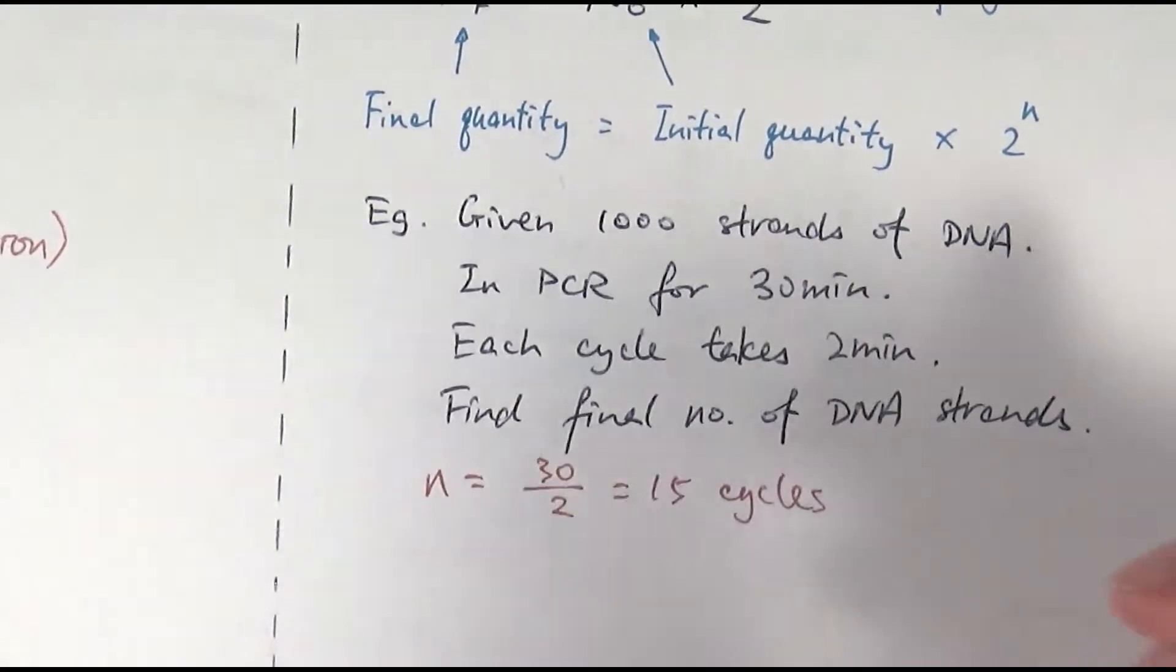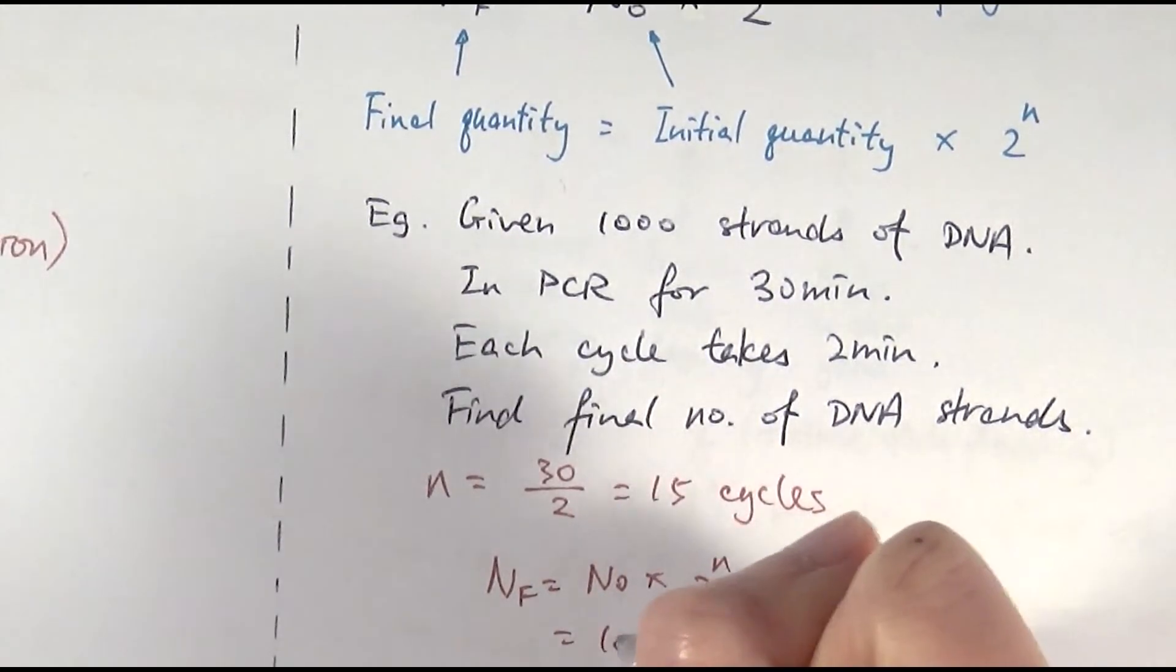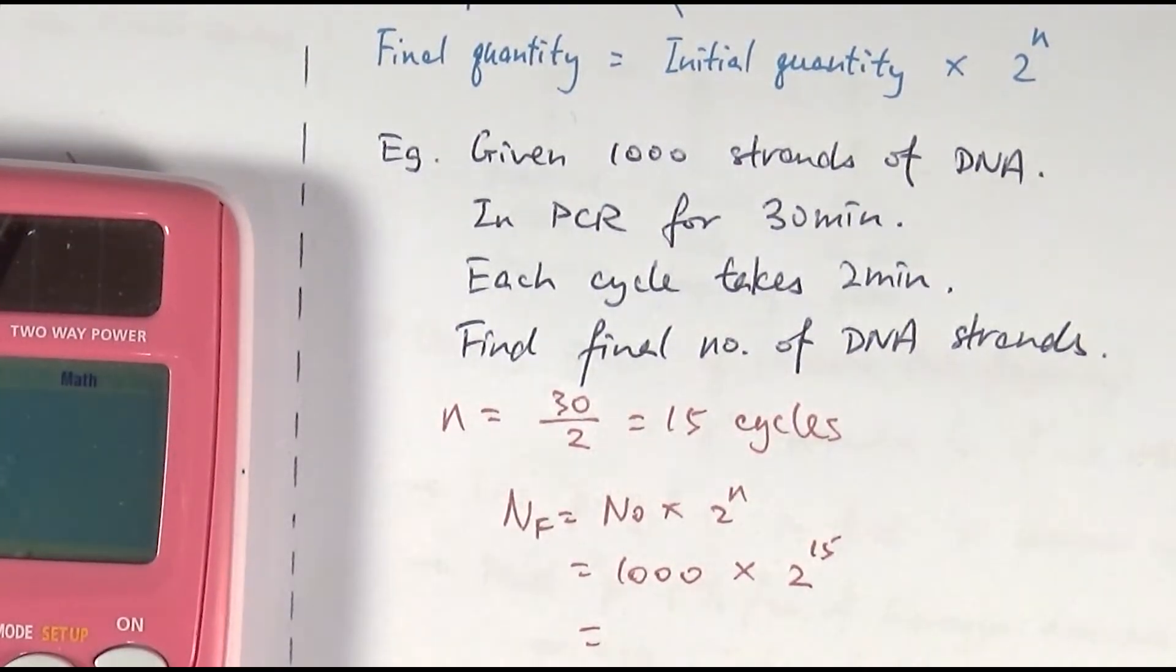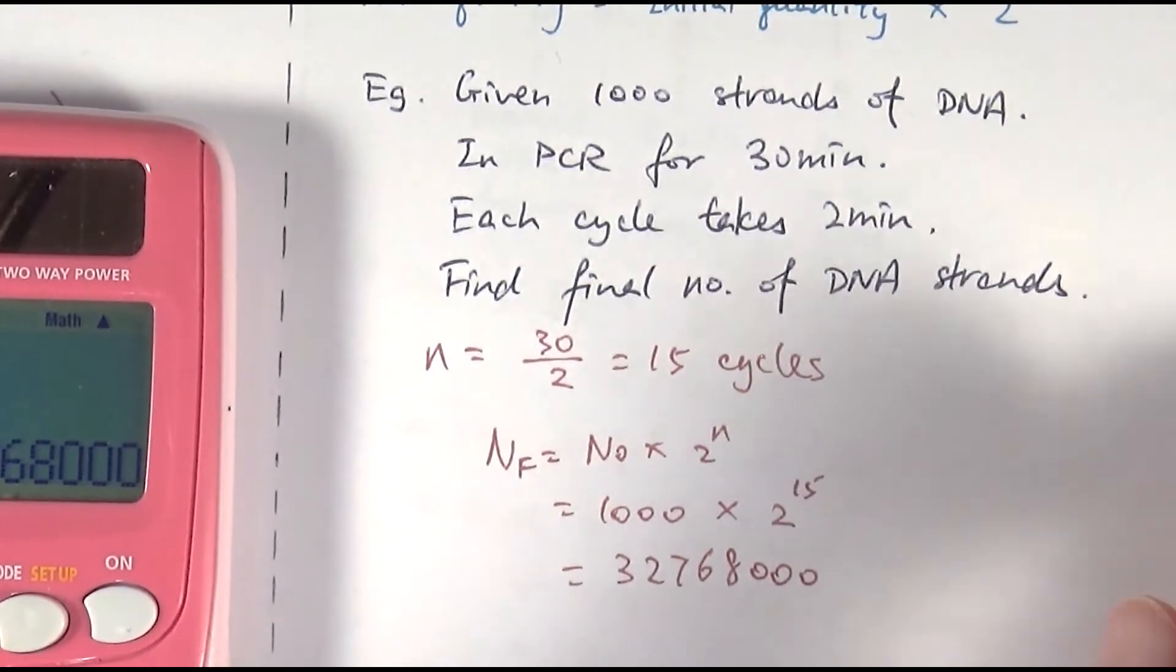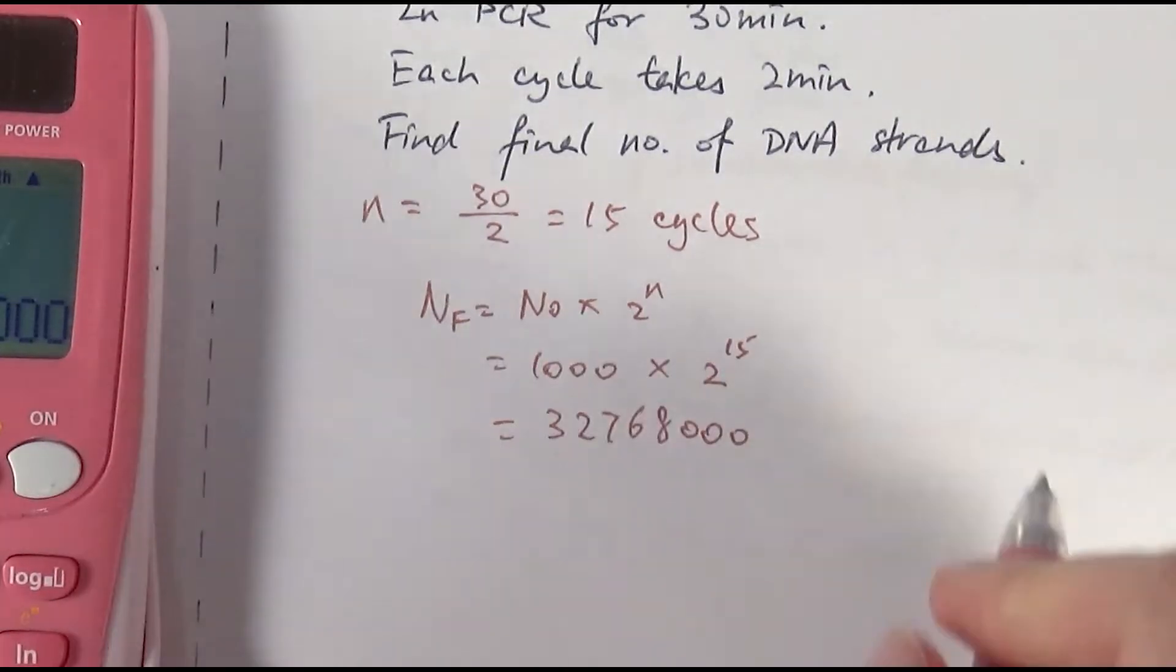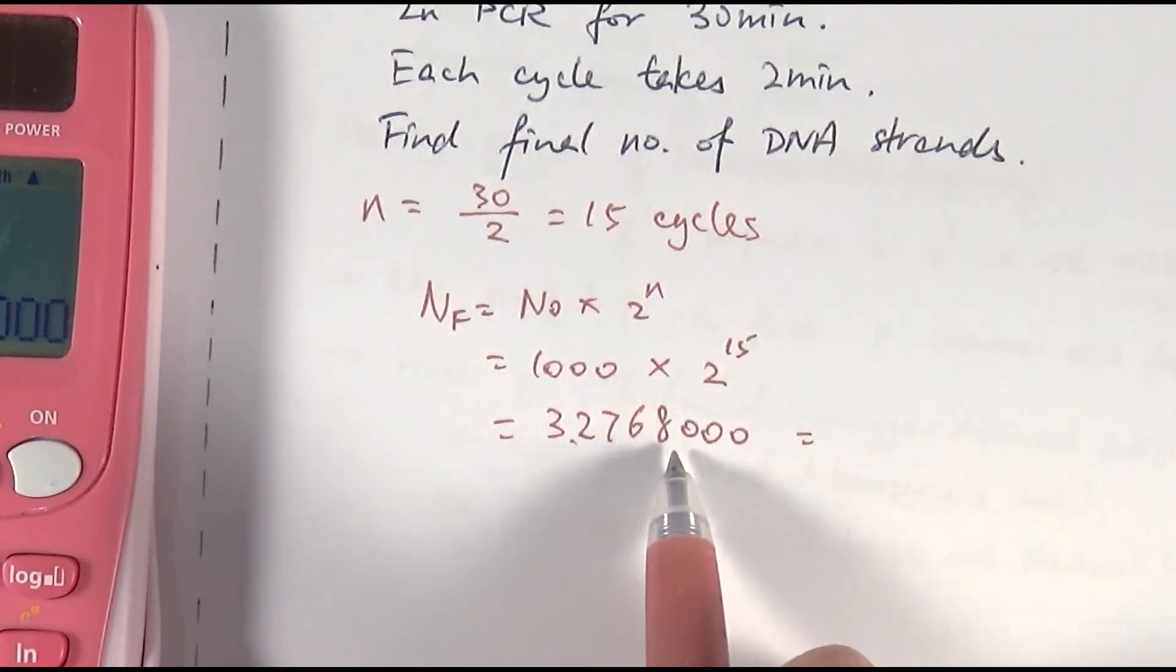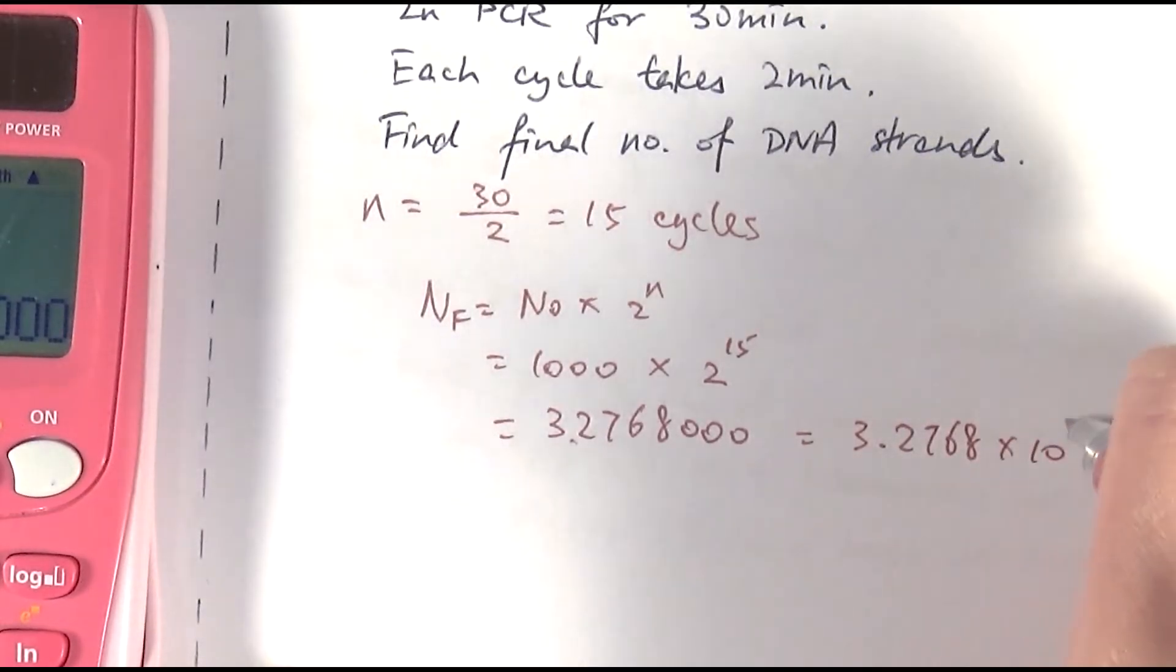And then all that's left really is to put the numbers in. So NF equals N0 times 2 to the n. So therefore N0, the original number is a thousand times 2 to the n, 2 to the 15th, because it's 15 cycles. Then put the numbers into the calculator. Then we would arrive at 32768. And sometimes in the question, they might say, present your answer in standard form. So we mentioned this in one of the previous videos. So the standard form would be, we have to present it as the singular, basically single digit. So I have to start from that point onwards. 1, 2, 3, 4, 5, 6, 7. So 3.2768 times 10 to the 7th.